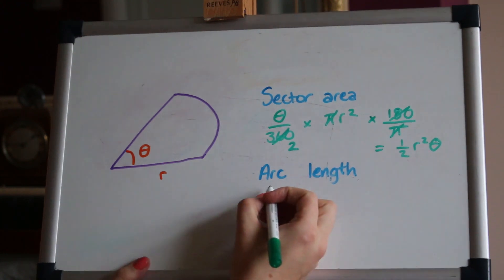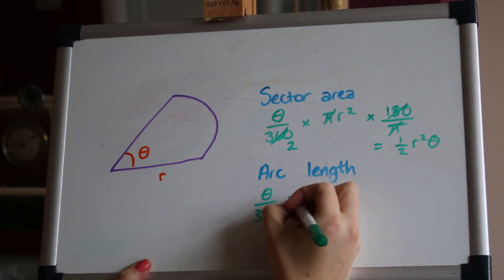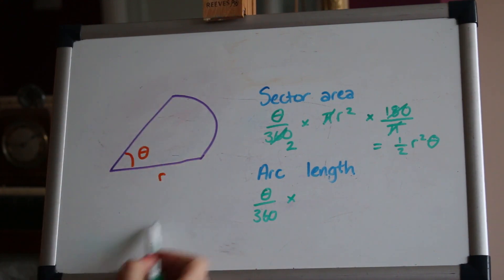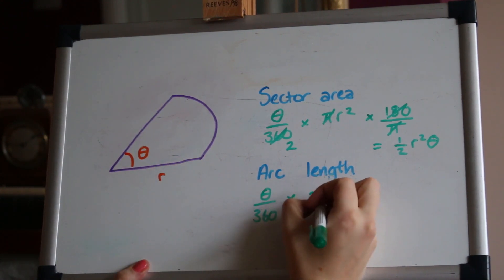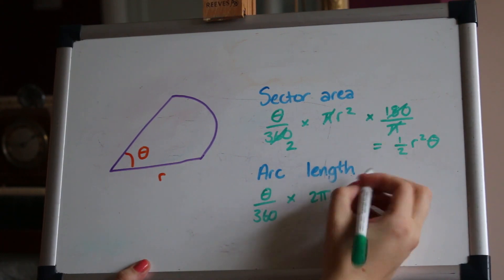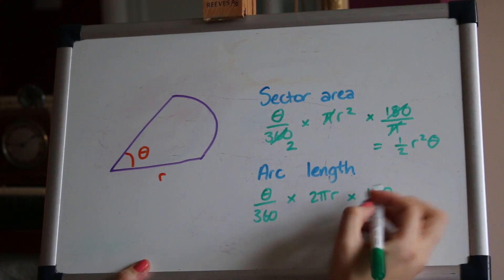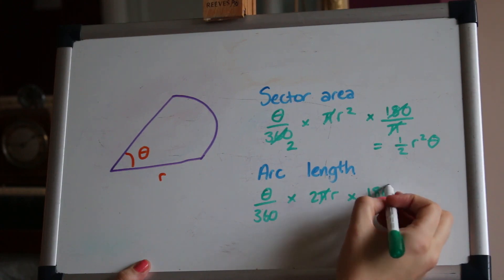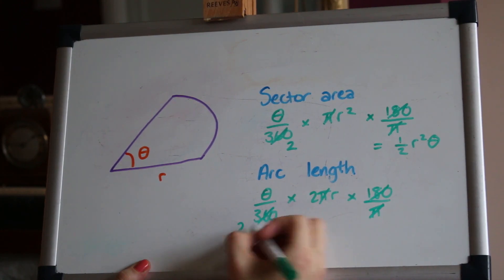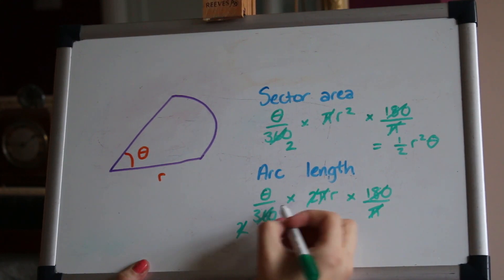The arc length is even better. Again, if we use the fraction of the circle in degrees and do the full circumference of the circle, that would be 2πr, and again multiply by our scale factor because we're in radians rather than degrees, then all of this stuff will cancel out and the 2 and the 2 will also cancel, leaving you with just rθ.